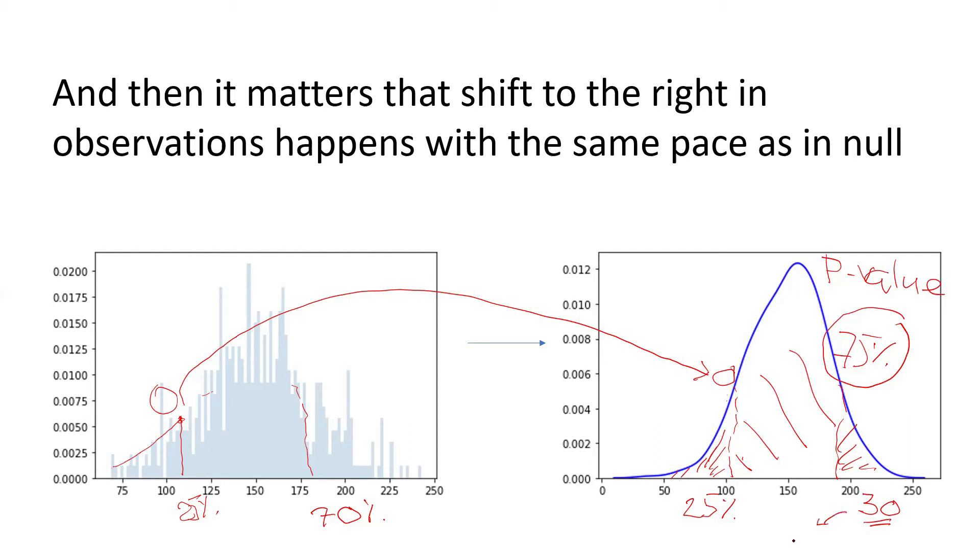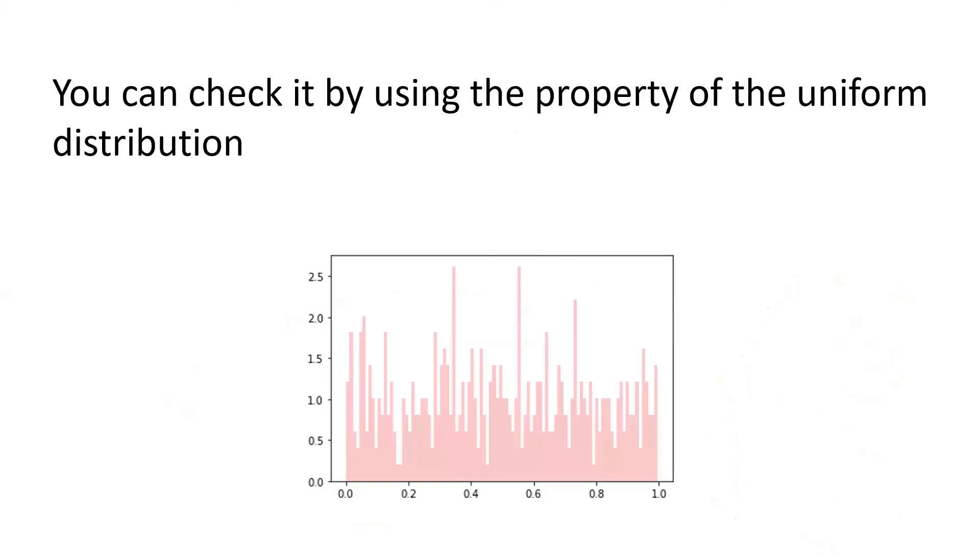And that is it. So in case of p-value, obviously it would be like 0.3 because we're doing percentages, but nonetheless. So it means that having the same pace, in fact, gives us this possibility to convert our percentiles into the p-values. And what I now suggest you to do is to check this logic by using the property of the uniform distribution.